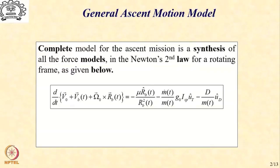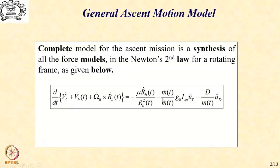This is a first order vector differential equation in terms of the velocity and the forces. As you can see, we have included the velocity expression in the most general case, and on the right hand side we have the three force terms discussed. The first one is the force term due to gravity, expressed in a coordinate system which is along the radial direction.